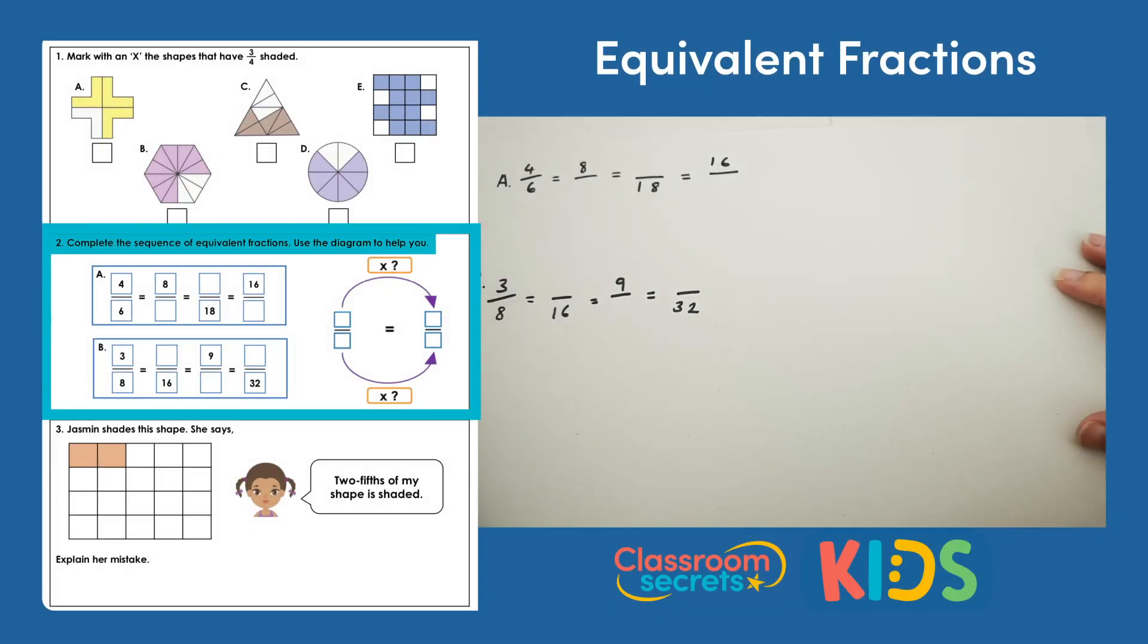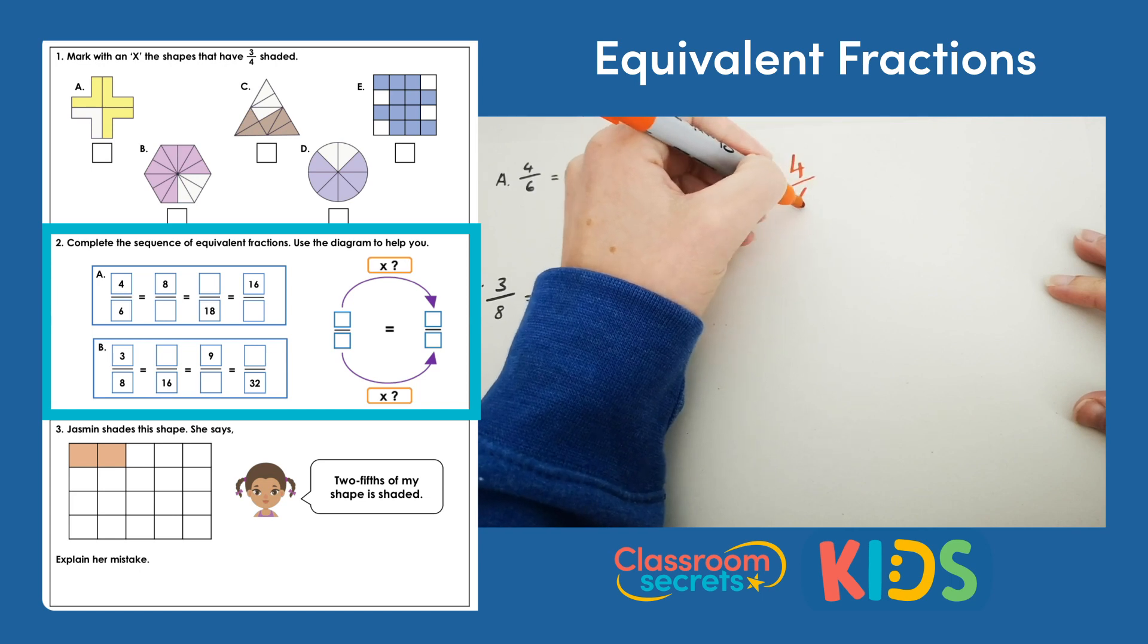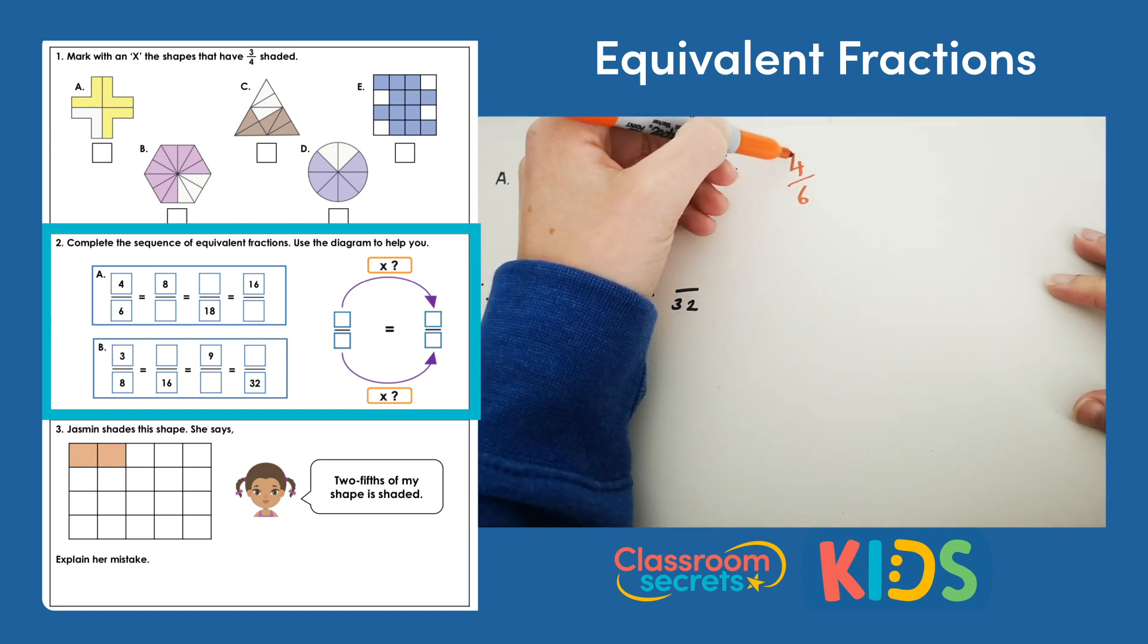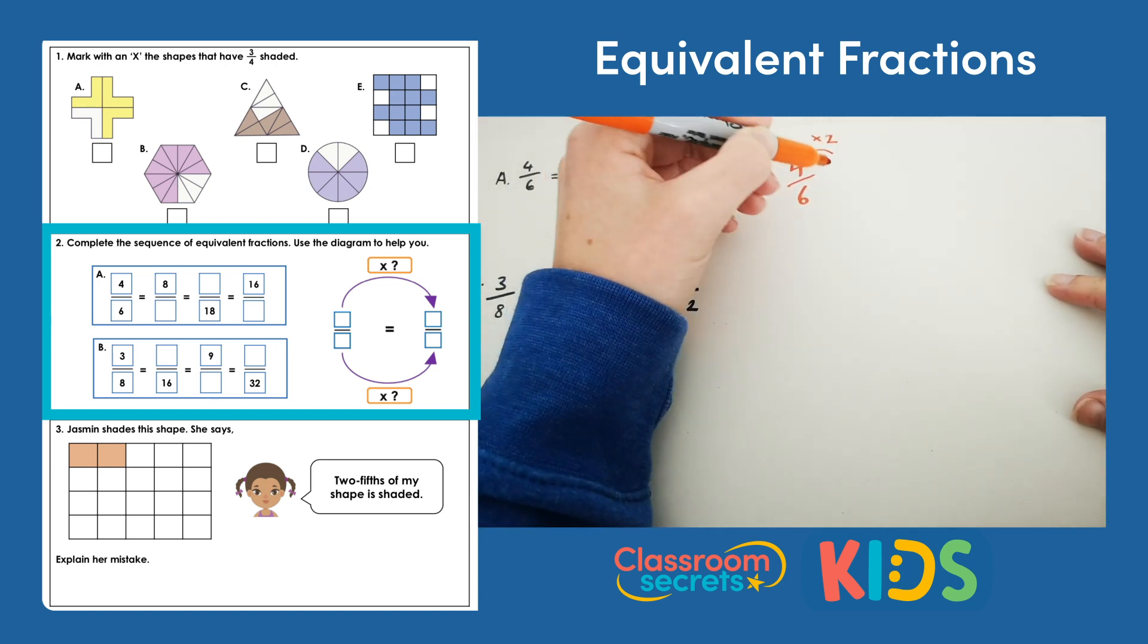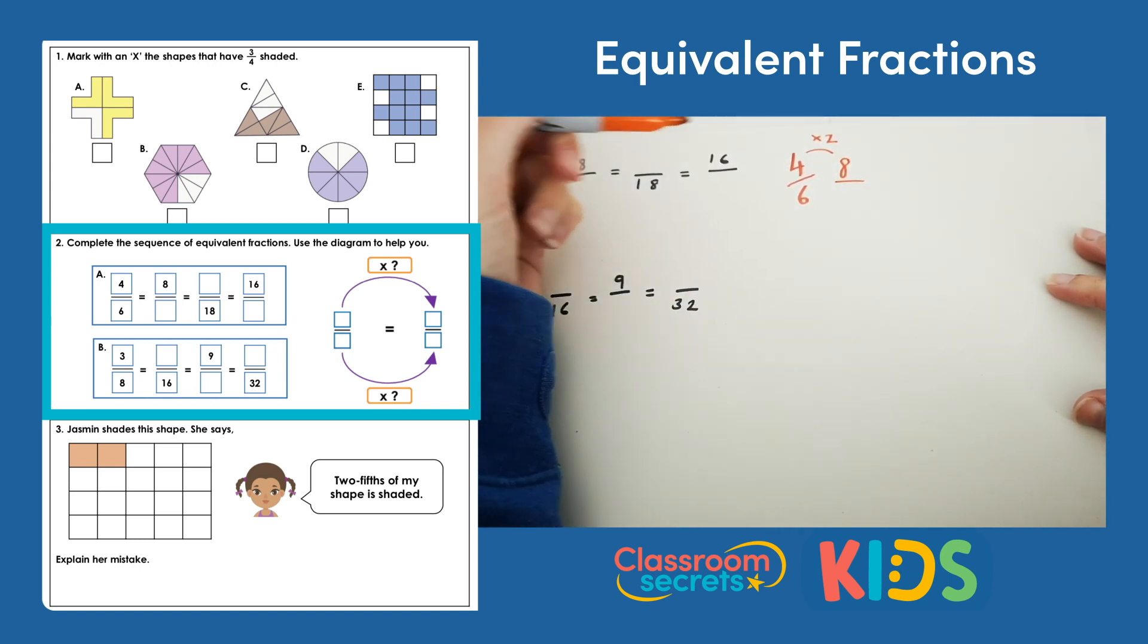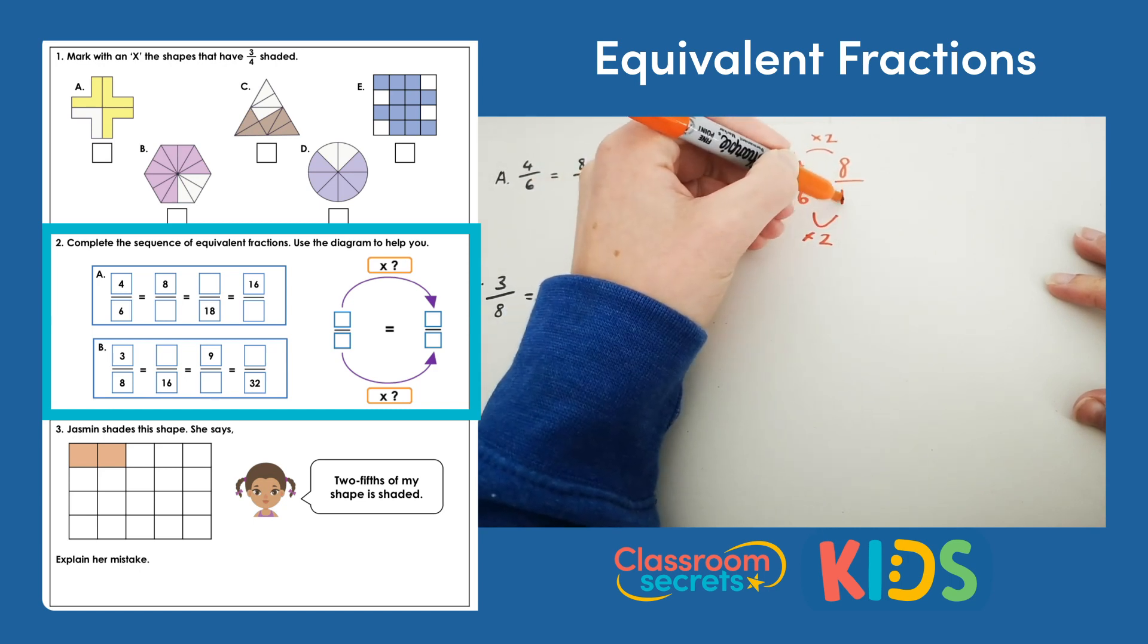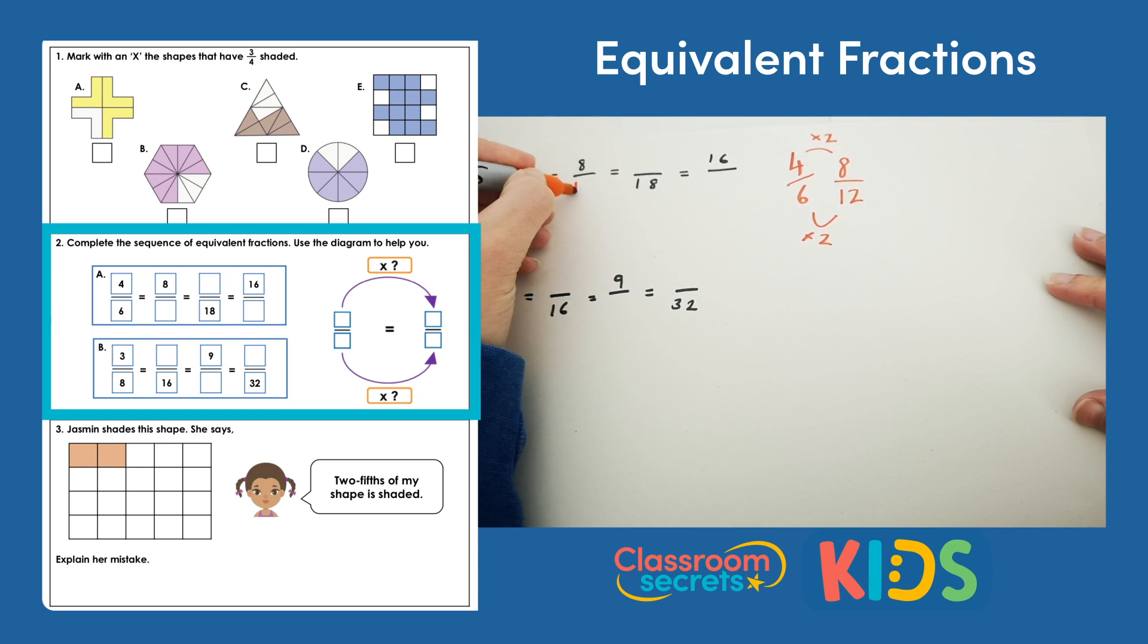Question two, complete the sequence of equivalent fractions, use the diagram to help you. So there's a sequence of fractions and they're all equal to one another, and then the diagram shows you what you need to do to the fractions to make them equivalent. So for example if we do four sixths and then the next fraction in the sequence has 8 as its numerator, 4 must have been multiplied by 2 to give us 8. And if you remember the rule, whatever you do to the numerator you do to the denominator, that tells us we also have to times 6 by 2, times 6 by 2, and that gives us 12. So 4 sixths is equivalent to 8 twelfths.